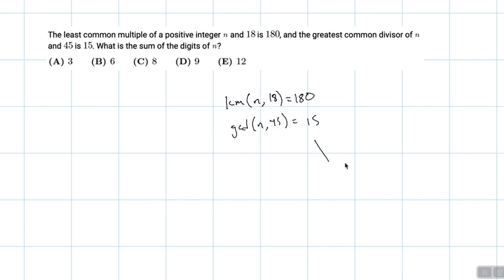So potential values that n could be - I'll start with values that satisfy this greatest common divisor of n and 45. So n could equal 15, which satisfies that.